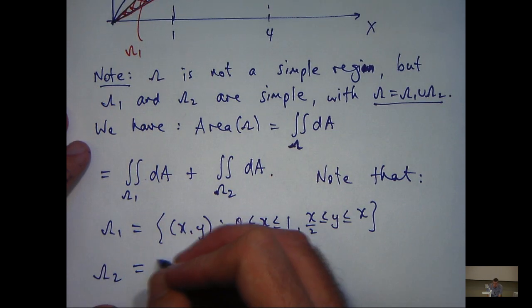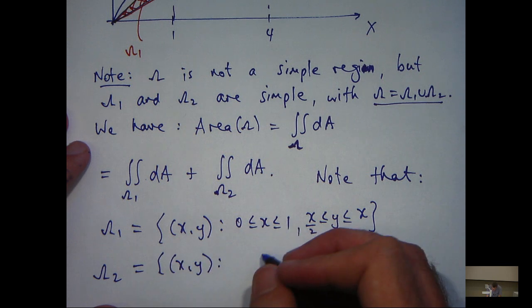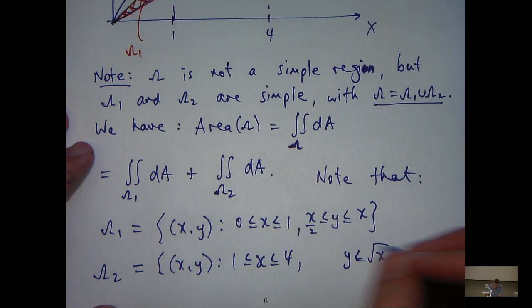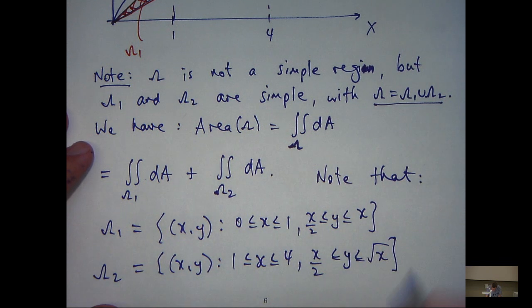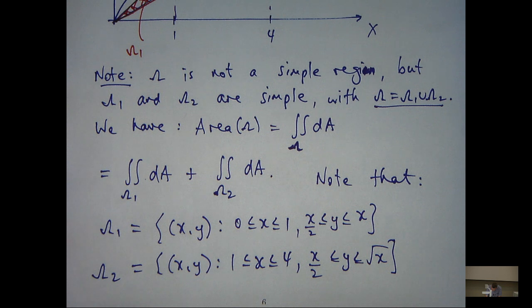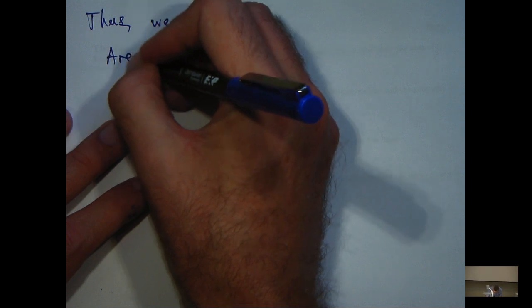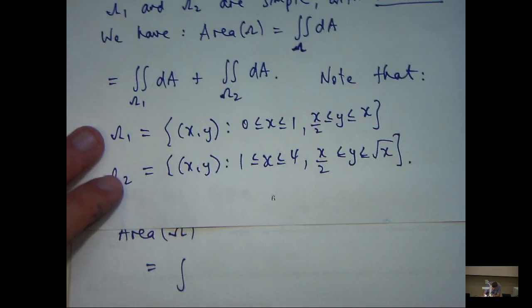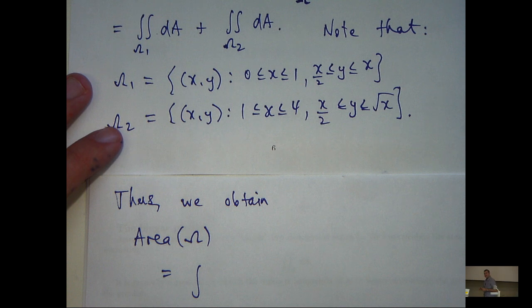So now we've got all we need to set up and evaluate these two integrals. So let's do that. Thus, we obtain the following: the area of omega.